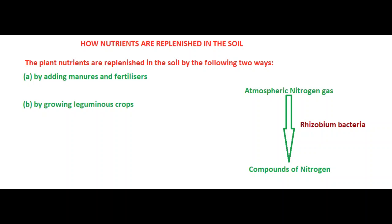Some nitrogen compounds are used by the leguminous plants for their own growth, and the remaining nitrogen compounds made by Rhizobium bacteria mix with the soil and enrich the quantity of nitrogen in the soil. Thus, the soil in the fields gets enriched with nitrogen compounds in a natural way.